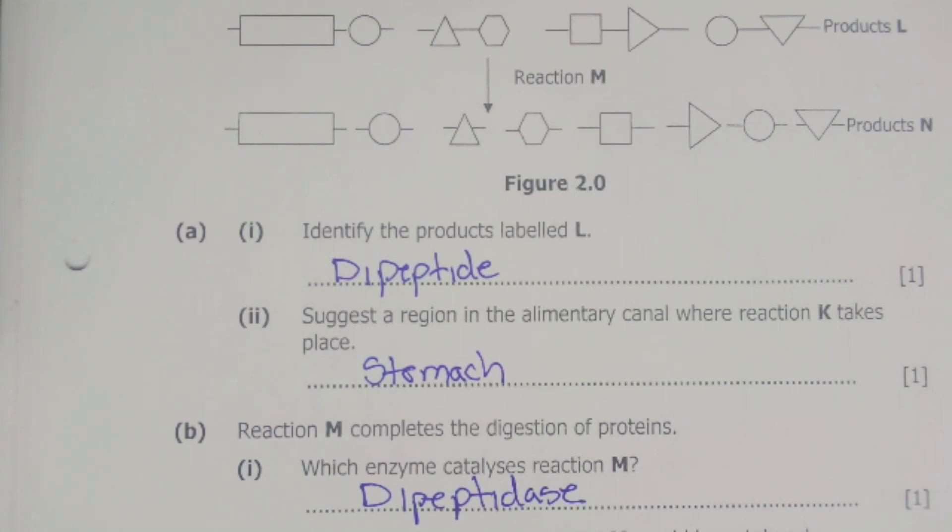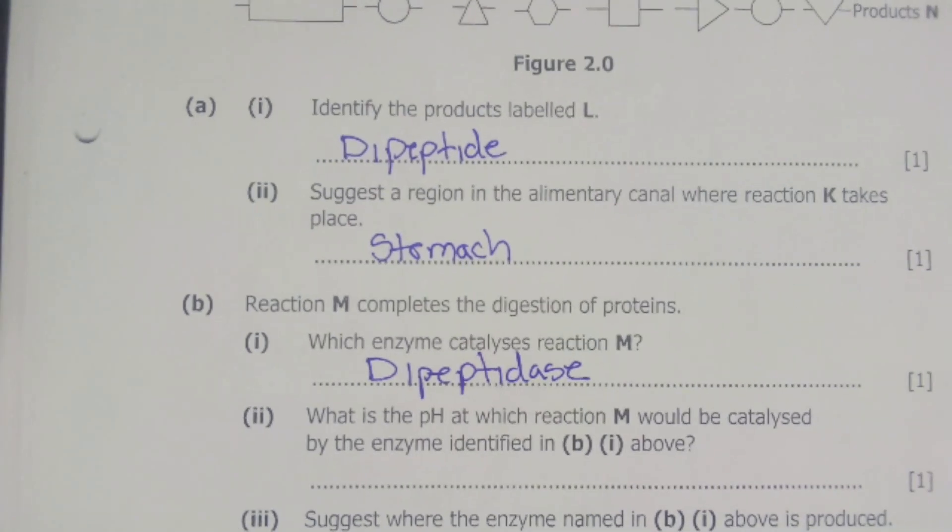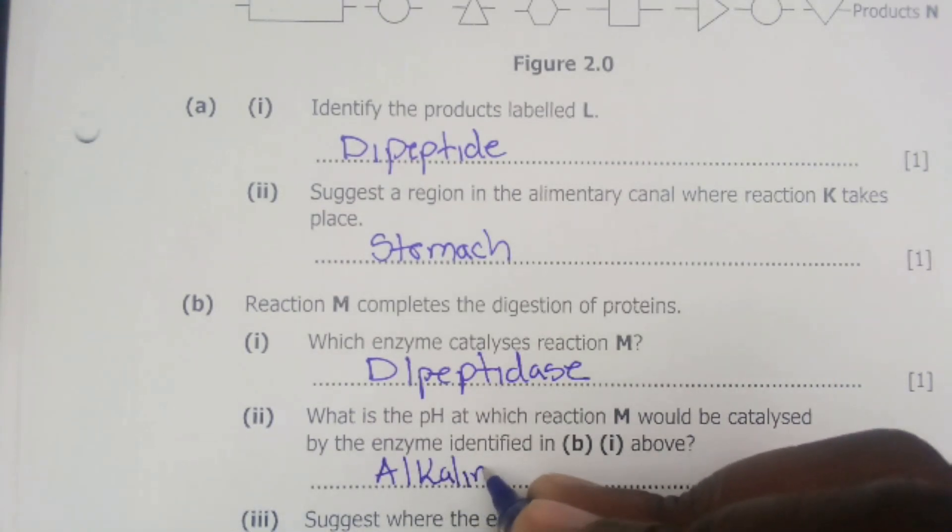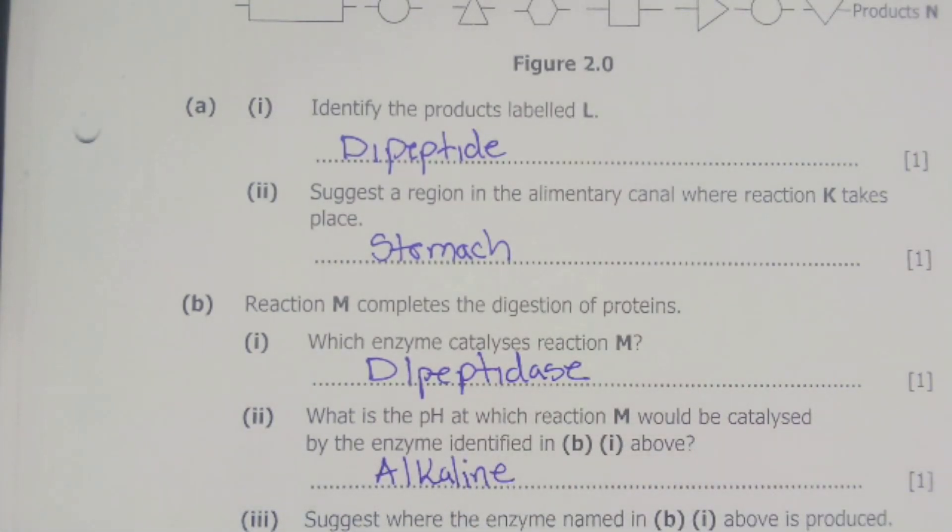The next question is B2. What is the pH at which reaction M would be catalyzed by the enzyme identified in B1? Here we are talking about dipeptidase. Dipeptidase will actually be present inside the duodenum of the small intestines. The small intestines work at an alkaline pH. So the answer here is simply alkaline.